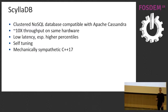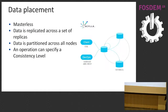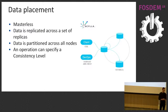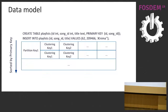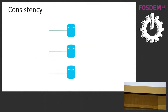We use direct I/O and bypass the page cache. The database is written in C++ with attention paid to fully utilizing the underlying hardware. We are a Dynamo-style system — there are no special nodes, and data is replicated across a set of replicas. The full dataset is partitioned across the whole cluster. The data model is based on tables with a primary key composed of a partition key and a clustering key.